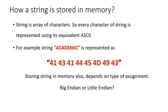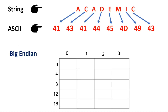How exactly a string is stored in memory depends on the endian format. There are two different ways to store data in memory: big endian format and little endian format. We have studied this in previous videos with different numbers as data. Today we will study how strings can be stored in memory using either big endian or little endian format, using ASCII through the big endian format.